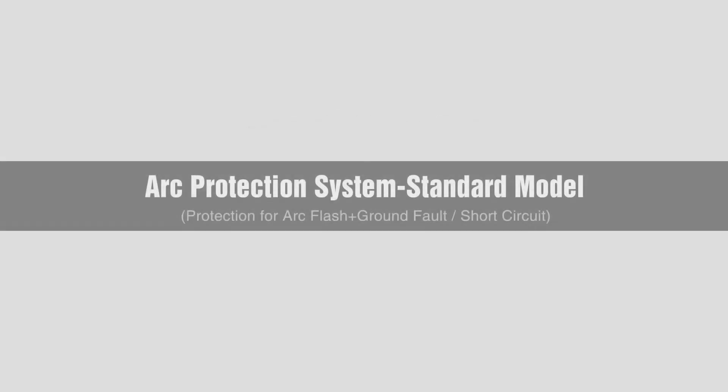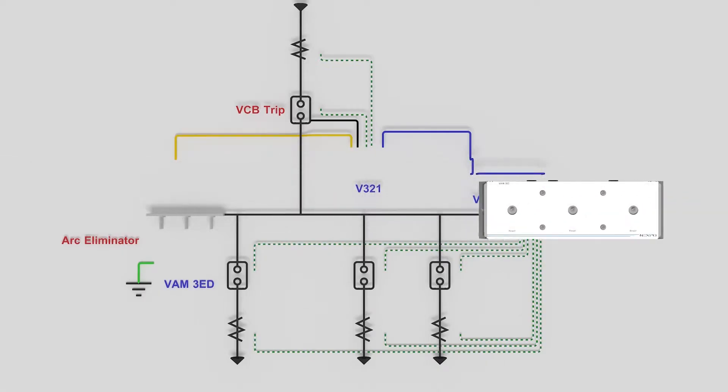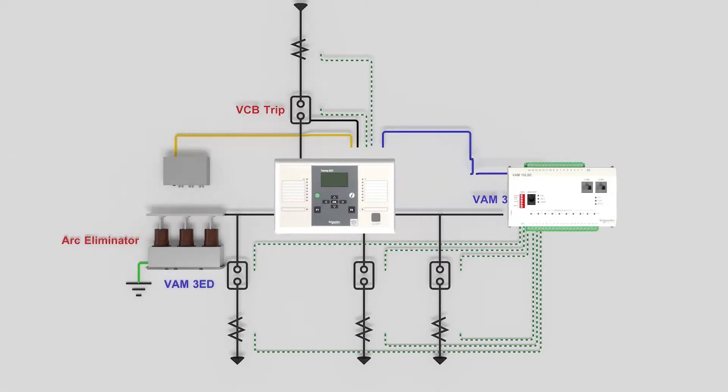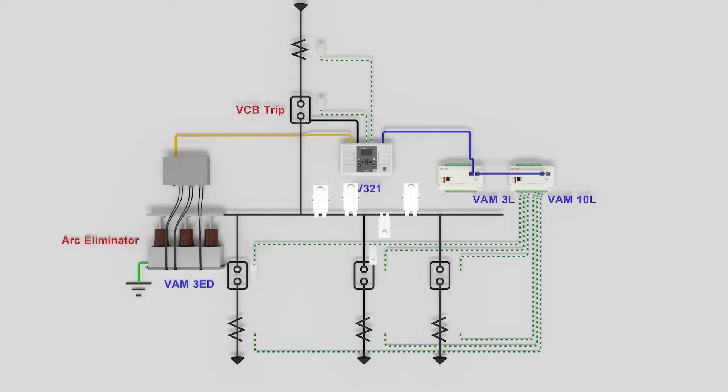The standard model is the arc protection system applied to protect electrical equipment and switchboards from arc faults. It uses arc protection relay to protect arc, ground, and short circuit.